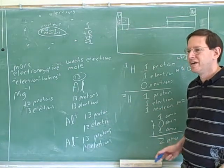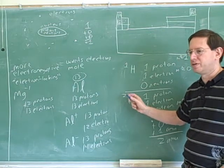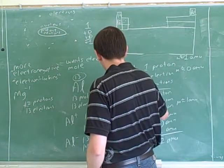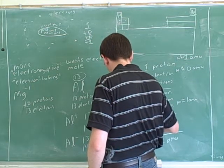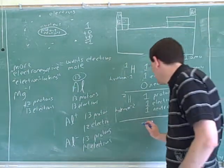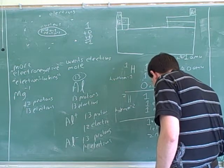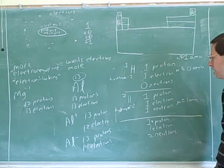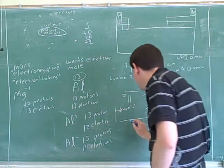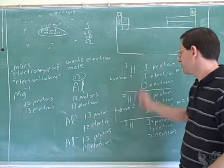So this is the type of hydrogen with no neutrons — it has a mass number of one, and we can call it hydrogen-1. This is the type of hydrogen with one neutron, so it has a mass number of two — hydrogen-2. There's also something with one proton, one electron, and two neutrons. What would be the name of this element? Hydrogen. One plus two is three, so this would be hydrogen-3.